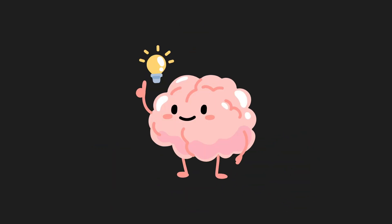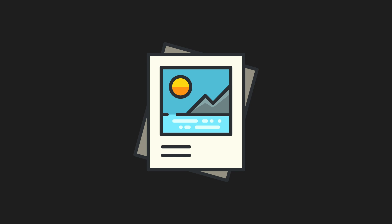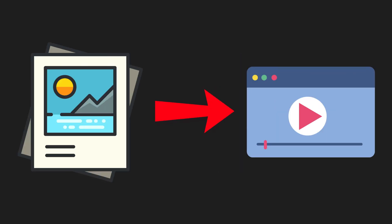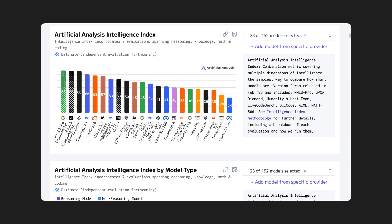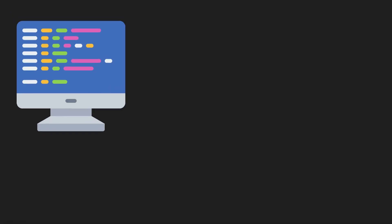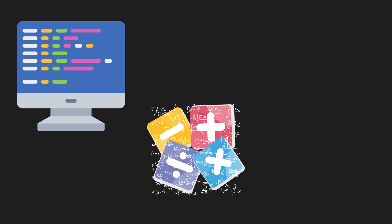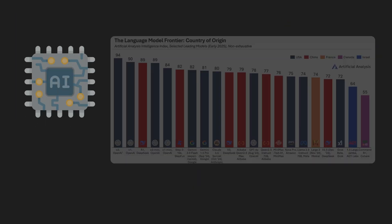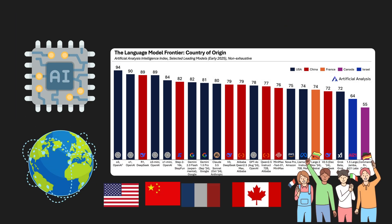Here's what we're going to cover in this video. First, we're going to take a look at the best AI models for image generation. Then we're going to dive into the top performers in image-to-video generation. After that, we're also going to explore models with the highest general intelligence score, and compare the best models for coding, math, and multilingual tasks. And finally, we're going to take a step back and look at the global AI race, comparing the top models from around the world.